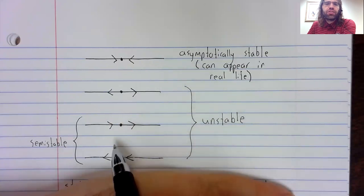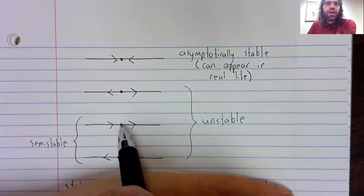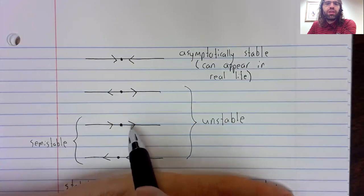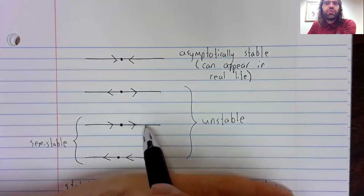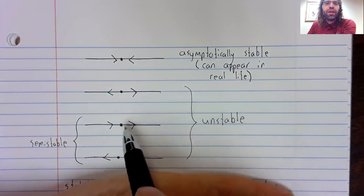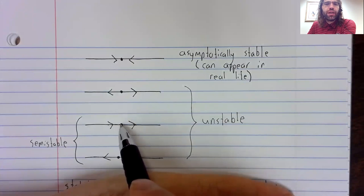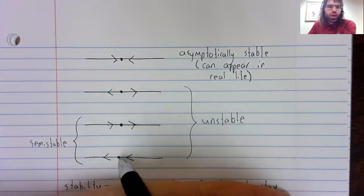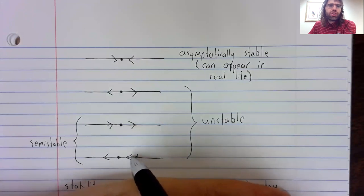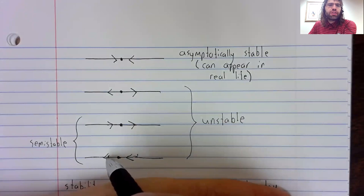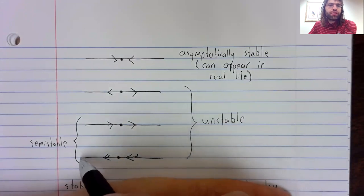Here, it depends on the direction. If you get knocked off the fixed point in this direction, you go away from it. If you get knocked off the fixed point in this direction, you come back to it. Similarly here, you get knocked off in this direction, you come back to it. You get knocked off in this direction, you go away from it.